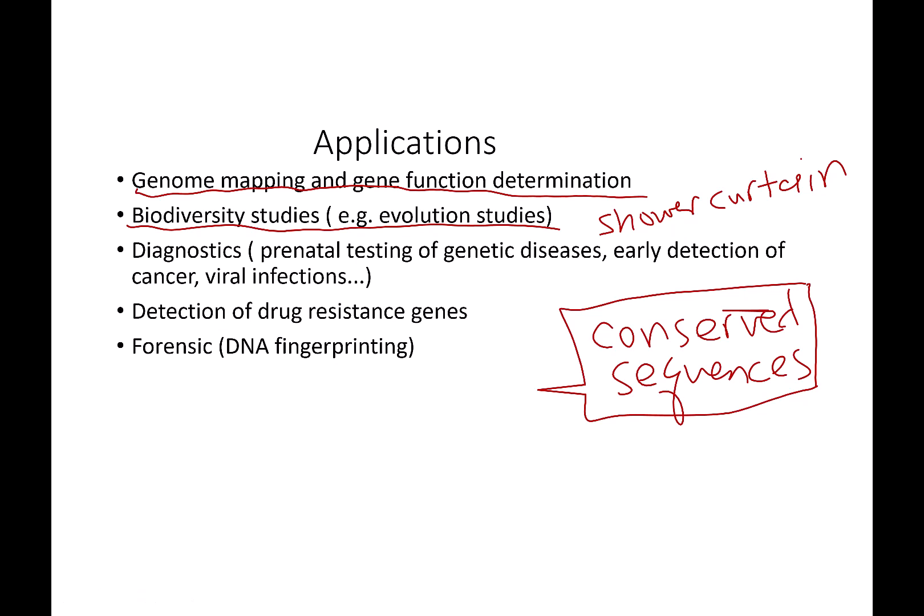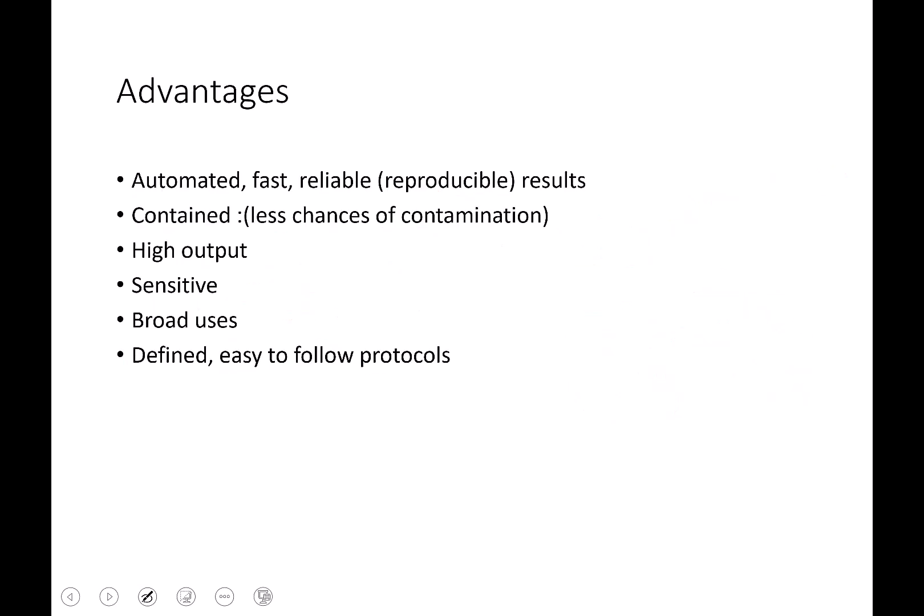Then you can also do diagnostics. Prenatal testing for genetic diseases, early detection of cancer, detection of drug resistance genes. So that is useful. If you look at the bacteria that is, if you have, if you know which bacteria is infecting your larynx, you can determine if it has a drug resistance gene in it. And of course we know all about doing DNA fingerprinting to find out 25 years after the man has been in prison that in fact, he didn't rape the woman.